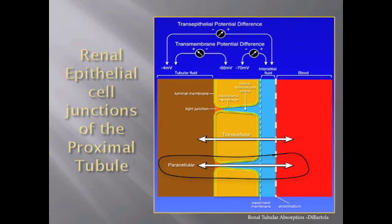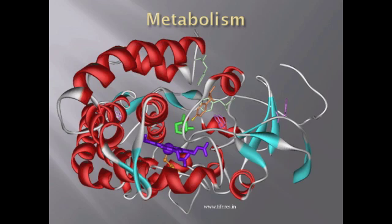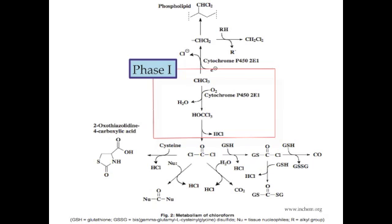Given the hydrophobicity of chloroform, the toxin can cross the renal epithelium by simple diffusion. Chloroform is metabolized mainly by phase 1 reactions through both oxidative and reductive cytochrome P450-dependent pathways, although it is suggested that the oxidative pathway is the main form of chloroform metabolism.